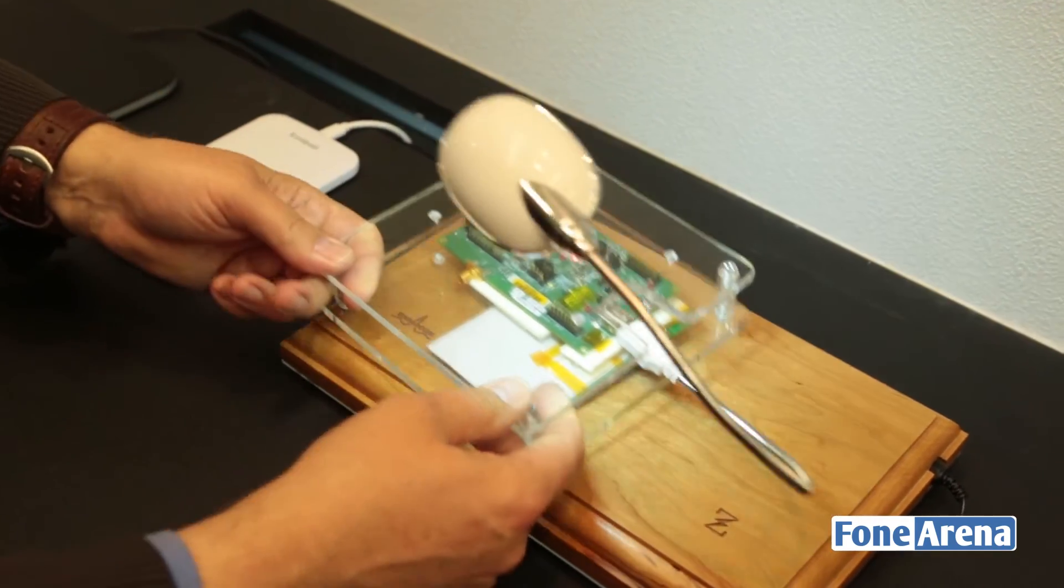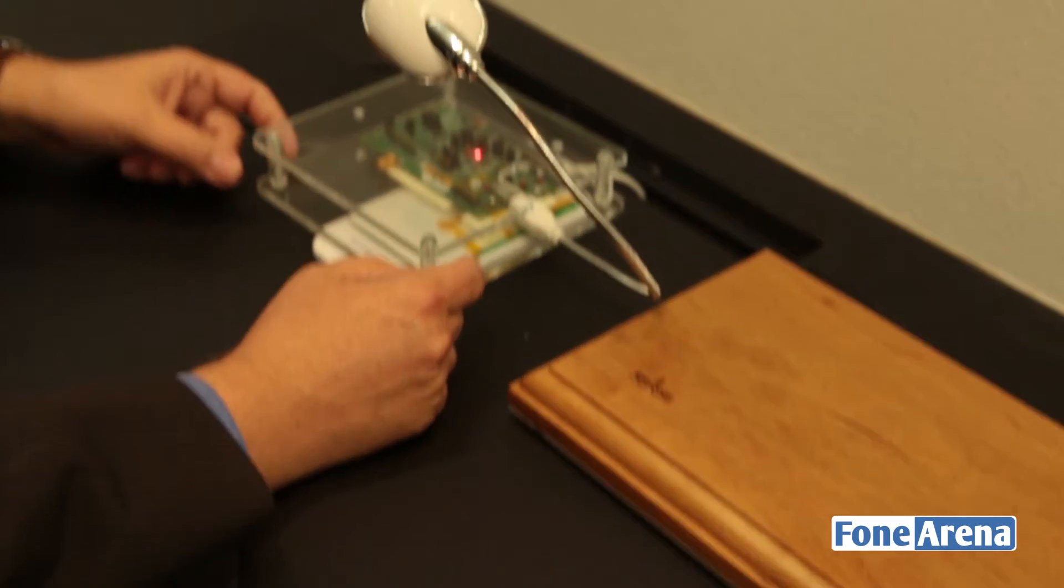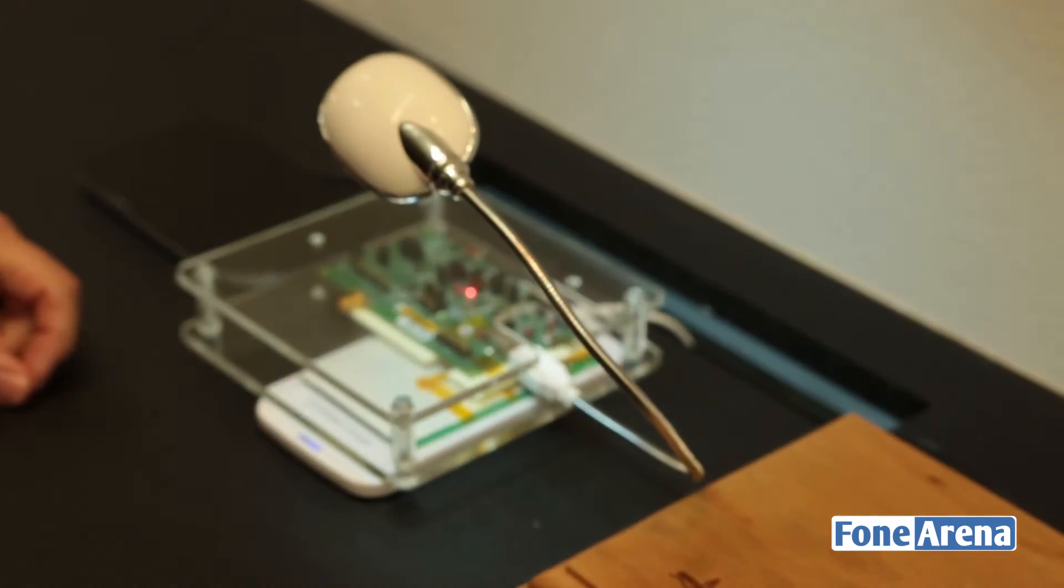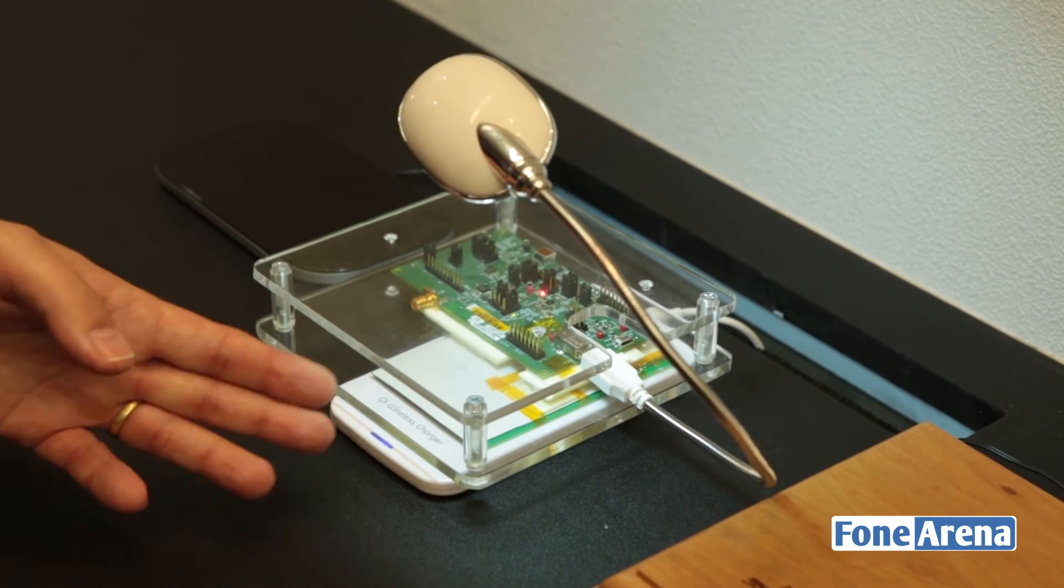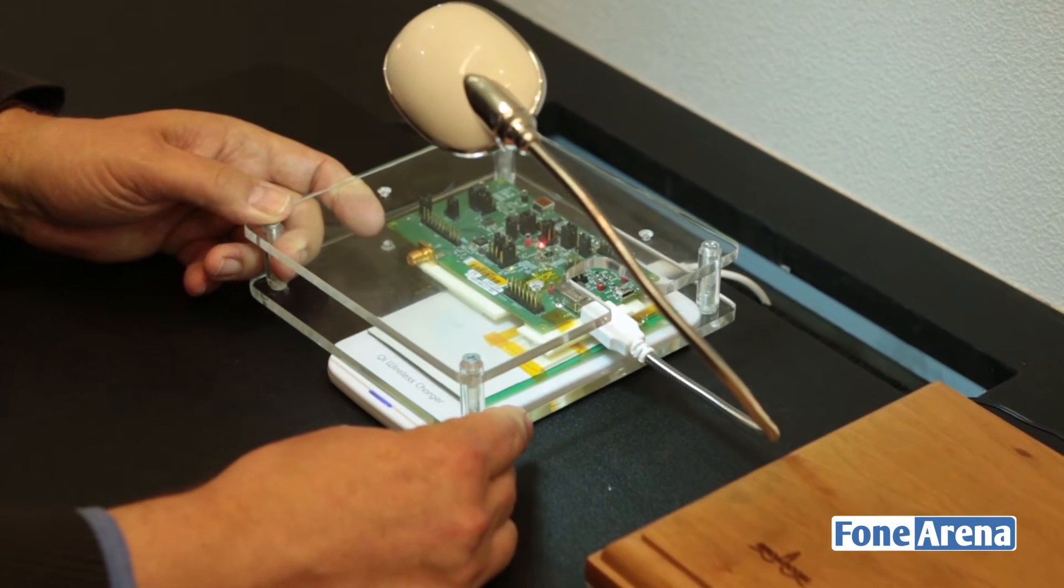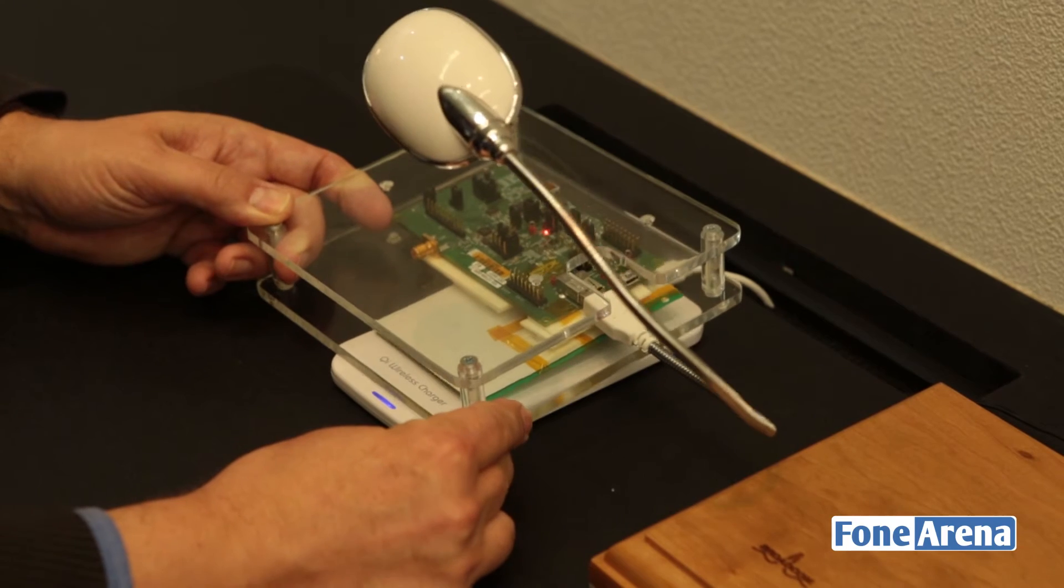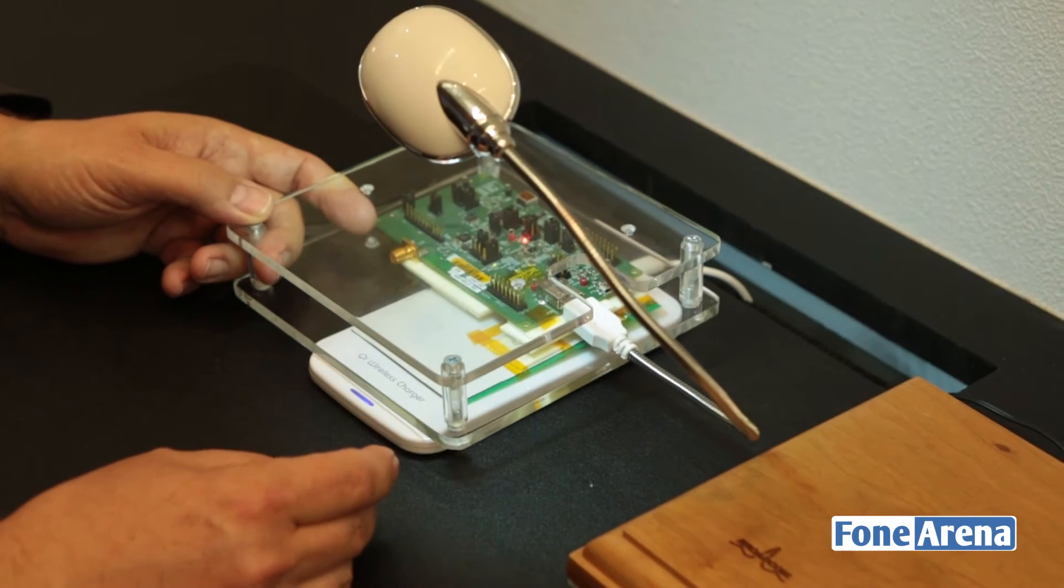Now let's go to the WPC standard. Here you see when I place the coil here, it will start charging. So this is how it will detect and it will start charging with WPC. If I lift this up a little bit, you see that the range that you can cover with a Qi standard is very small. It's about 5 millimeters.